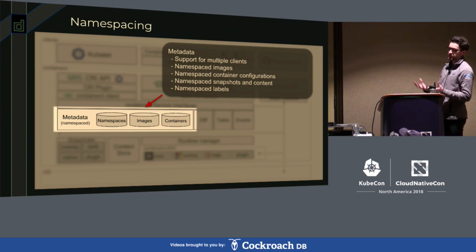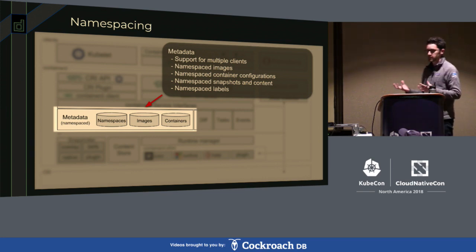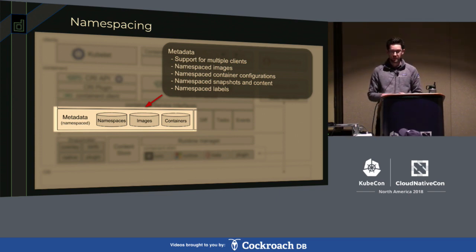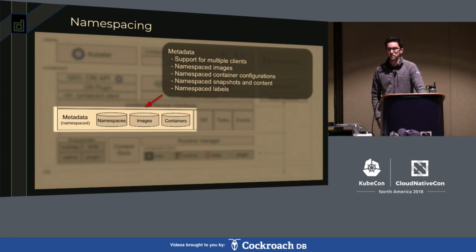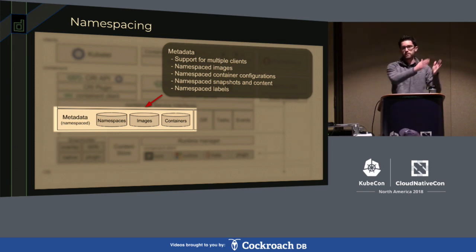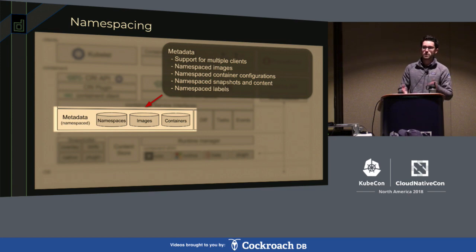The metadata service is what actually does the namespacing. It will namespace all your images, containers, snapshots, all the content, even down to the labels put on any of these objects. Basically any object you're using within ContainerD itself is namespaced. This is primarily to support multiple clients - ContainerD is designed to be used within Docker, within Kubernetes, within any platform that wants to run containers - but designed so that they don't step on each other and don't interfere with each other's containers accidentally.